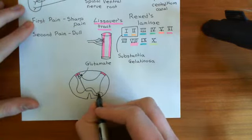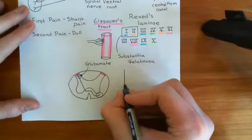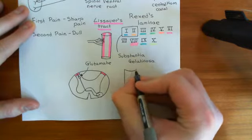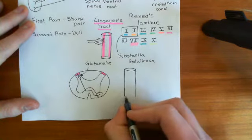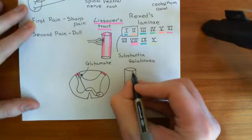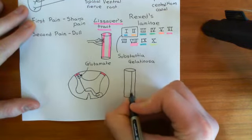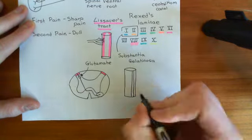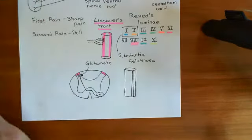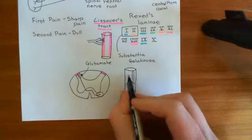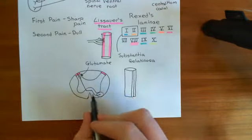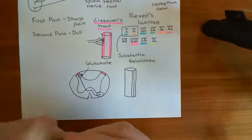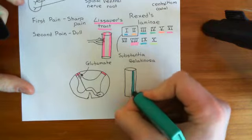These neurons will all run up the spinal cord. If we show the spinal cord in its axial position, you've got this collection of axons running up at the front of the spinal cord on the left-hand side, having come from the right-hand side. At all different levels you'll be having axons coming into this tract — this is what's known as the spinothalamic tract.